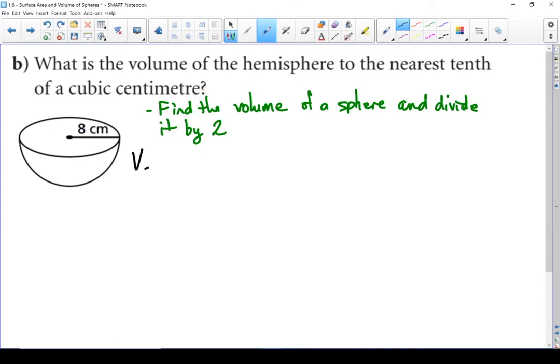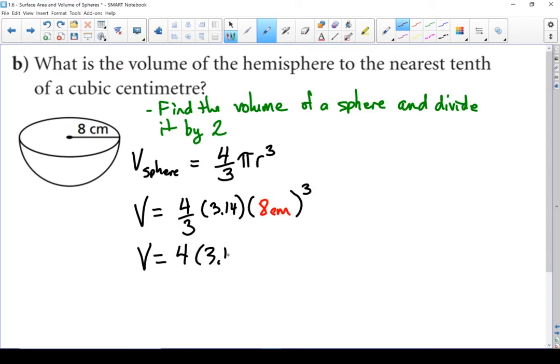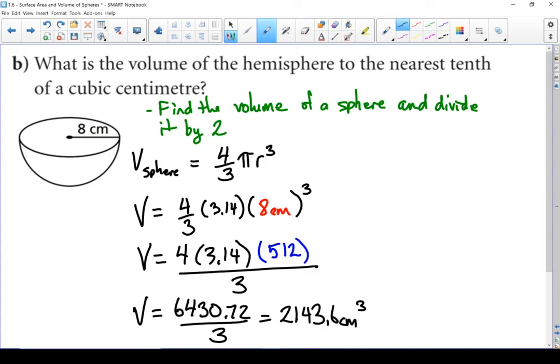Let's start with a formula. Let's put in the parts that we know. And let's calculate that out. So the volume of a full sphere is 2143.6 cubic centimeters.